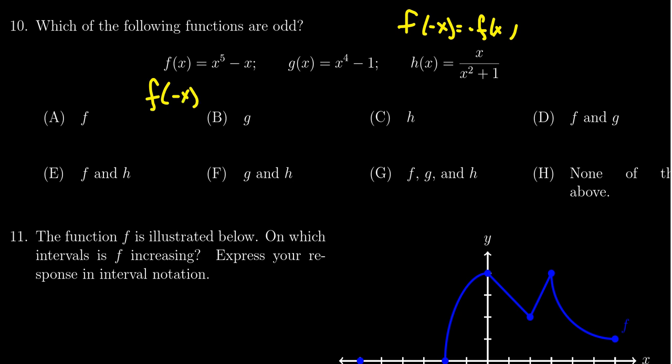You have f of negative x that equals negative x to the fifth minus negative x. Since they're odd powers the negative sign comes out, you get negative x to the fifth. Again you have this negative negative x, factoring out the negative sign you get x to the fifth minus x which then equals negative f of x.